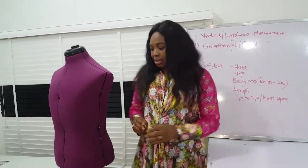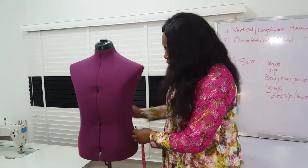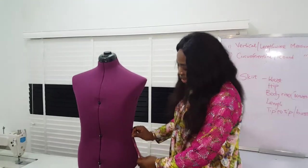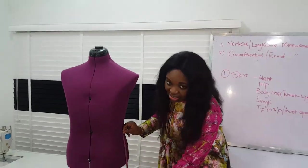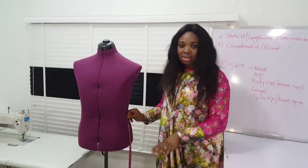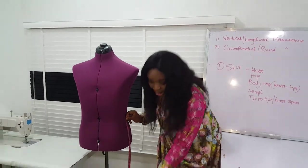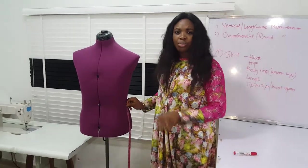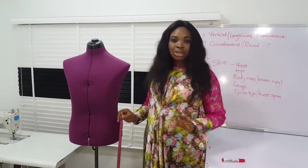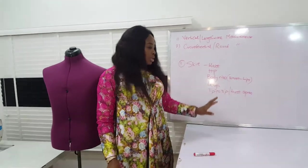The next measurement is the length of the skirt. You take this from where your skirt sits down to your desired length. It can be a short skirt, a knee length, a floor length — whatever your choice. That's for the length measurement.